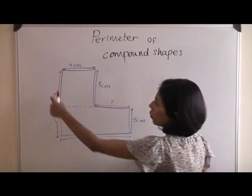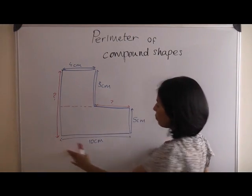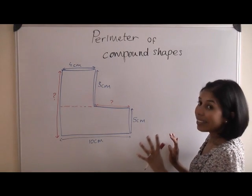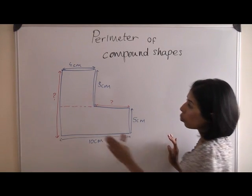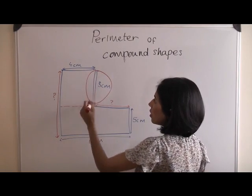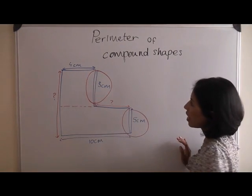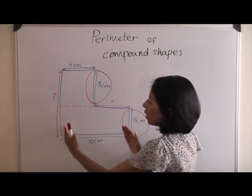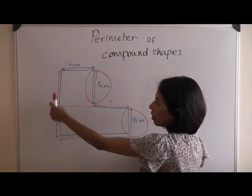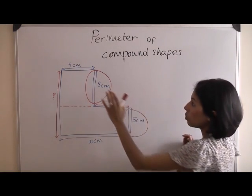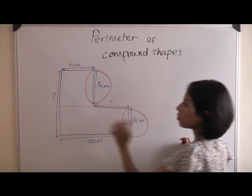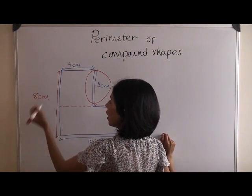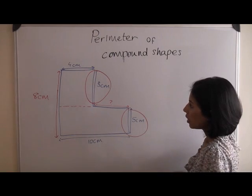The first length we need to find, from top to bottom, we need to look for clues as to what that length could be. We know that it's parallel to this line here and this line here. If you put them together, they would be exactly the same length as that missing length there. So we need to make an addition here. Three plus five is eight. So this missing length is eight centimeters in length.